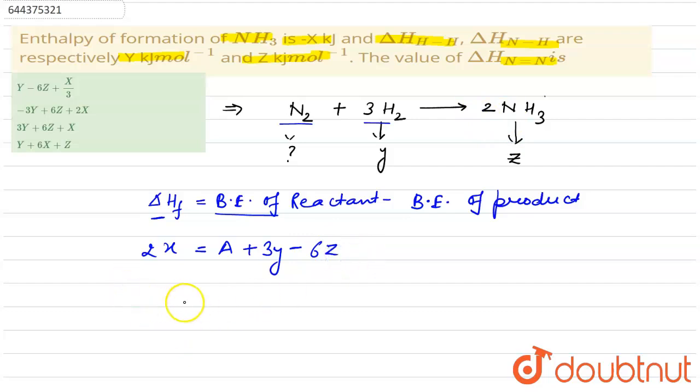It will be equal to A equals 2x minus 3y plus 6z. It is the bond energy of nitrogen triple bond nitrogen.